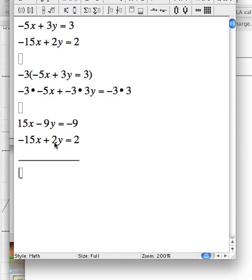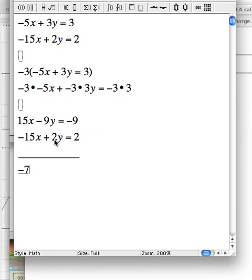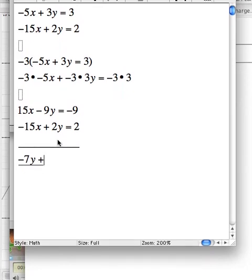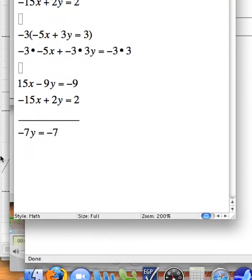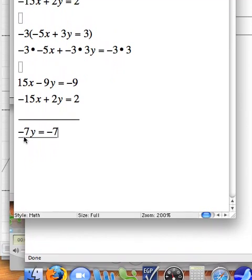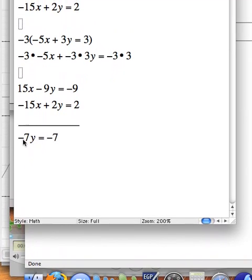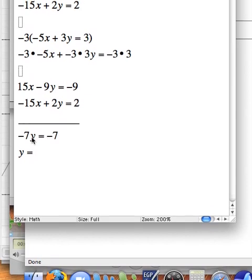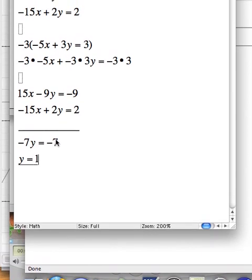Now, negative 9y plus 2y is negative 7y. And negative 9 minus 2 is negative 7. So it looks like this is going to divide cleanly and give me a nice whole number. And if I divide by negative 7 on both sides, on the left side, that'll cancel and I'll be left with y. And if I divide by negative 7 on the right side, I'm left with 1.